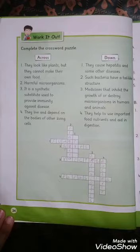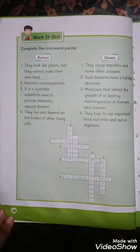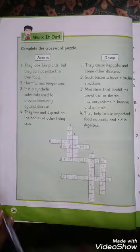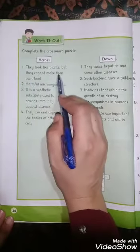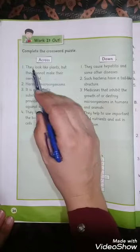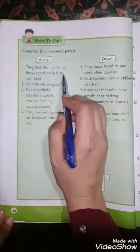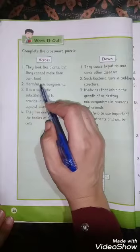You will be given hints to help you solve this puzzle. Number one across: They look like plants but they cannot make their own food. The answer is fungi.